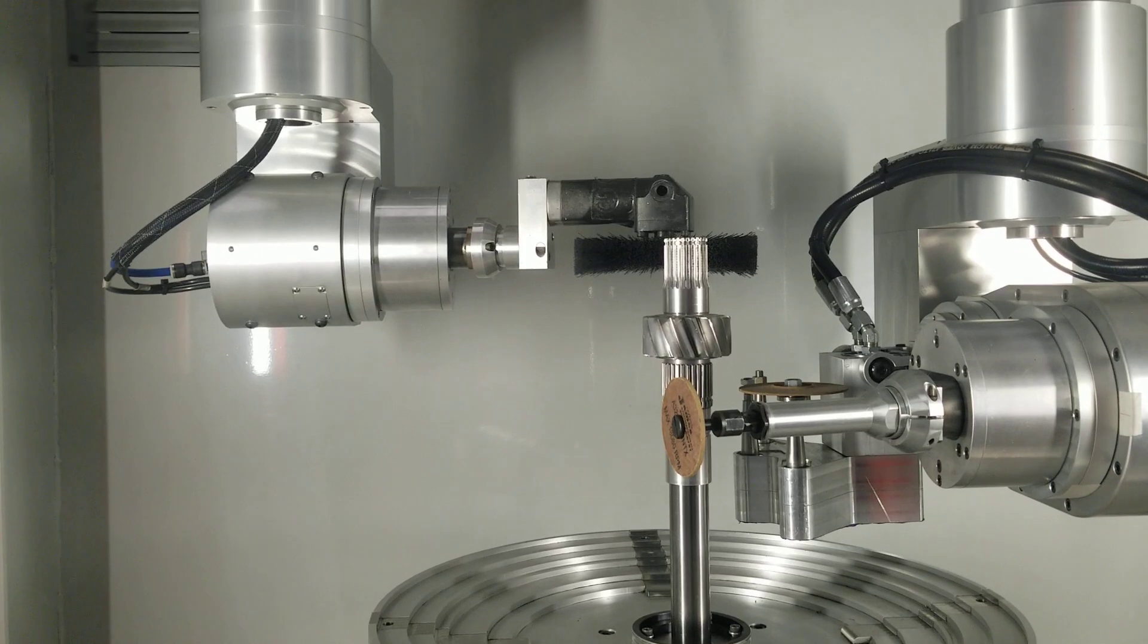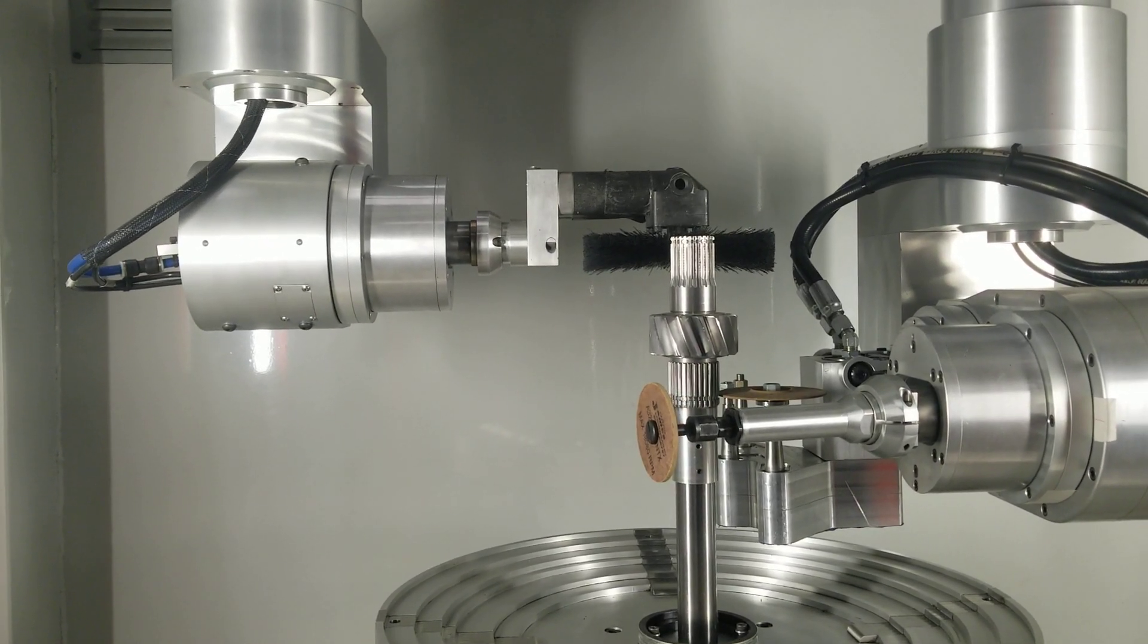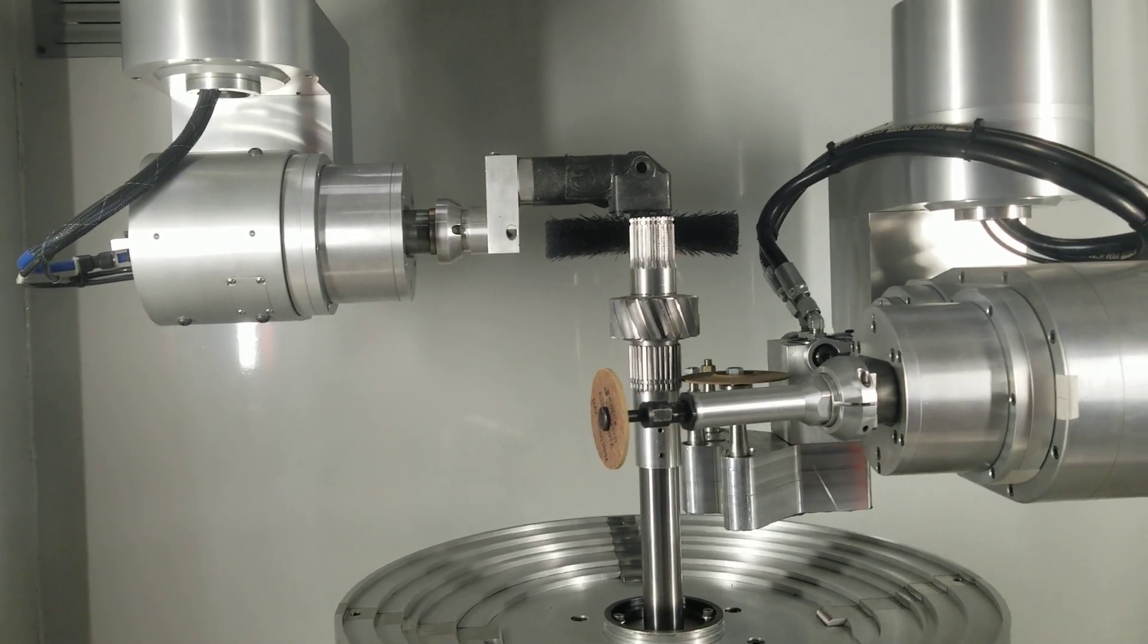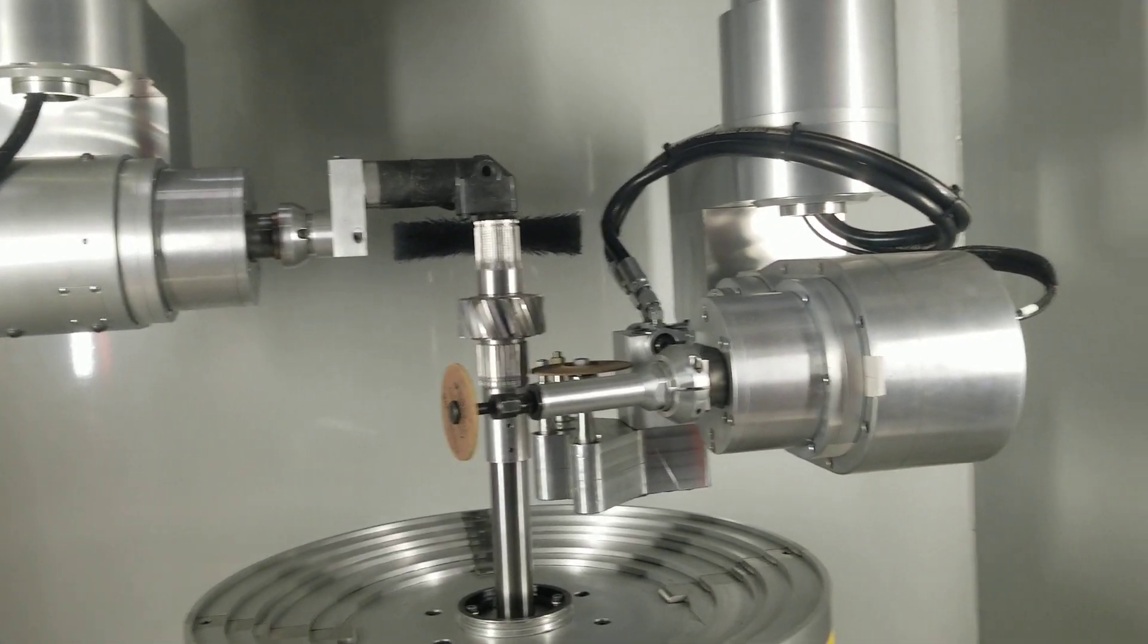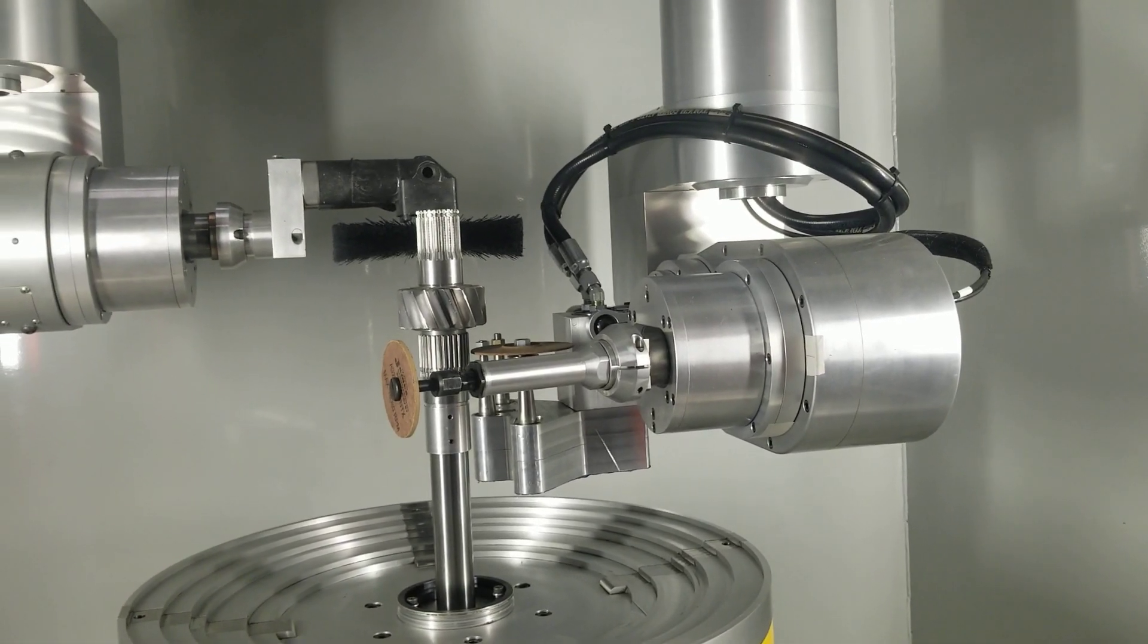Then we come in and we start brushing the spline. So concurrent operation, two things happen at once. Then we have a burr at the top side of the spline right there we have to go after.